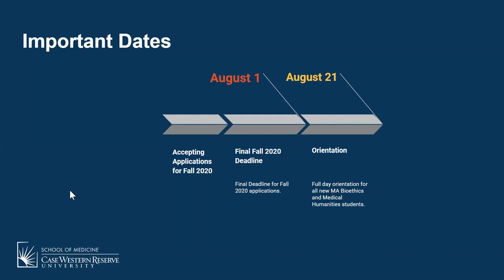Our final deadline for fall 2020 is August 1st. While there is some time, we recommend getting applications in as soon as you can so we have time to review and you have time to make decisions. We're also looking forward to our orientation on August 21st. We're still not entirely sure what that's going to look like given that we have to do what we're calling dual delivery — this hybrid model of in-person and online — but more information will be made available about that as well.